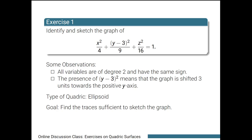First, we observe that when we look at the individual degrees of the variables present, all of them are of degree 2. For instance, the first term x squared over 4 is degree 2, the second term when expanded is also degree 2, and the last term z squared over 16 is also degree 2. Moreover, when we move all terms with the variable on one side of the equation, all of them have the same sign — in this case, all of them are positive. Combining these two observations and from the classification of quadratic surfaces given in the lecture, our surface is an ellipsoid.